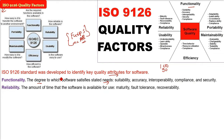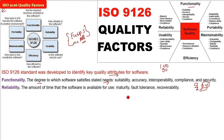Then there is reliability — the span of time the software is available for use without any failure. If a user wants to use the software, is it available? The underlying factors here are maturity, fault tolerance, and recoverability.